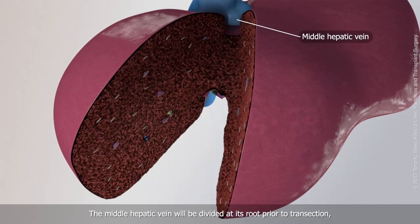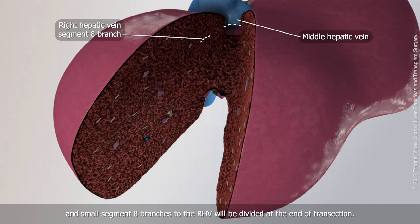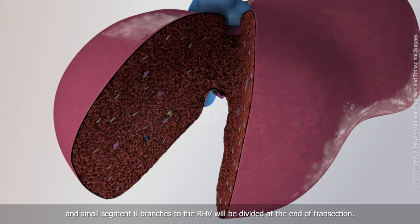The middle hepatic vein will be divided at its root prior to transection, and small segment 8 branches from the right hepatic vein will be divided at the end of transection.